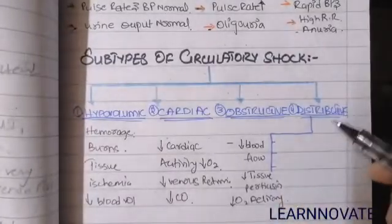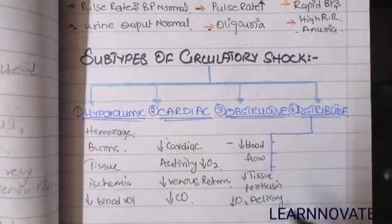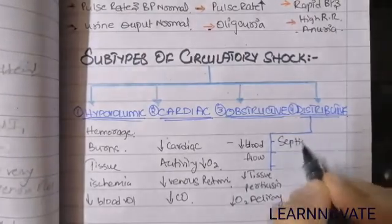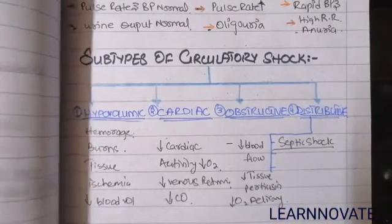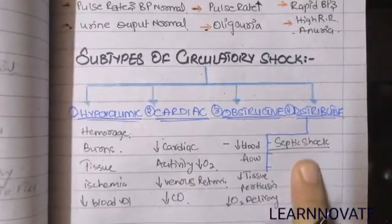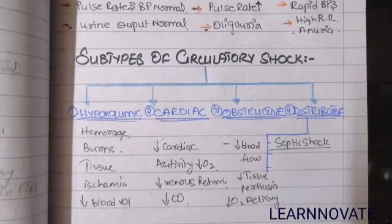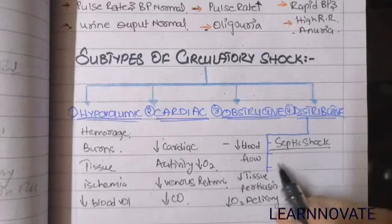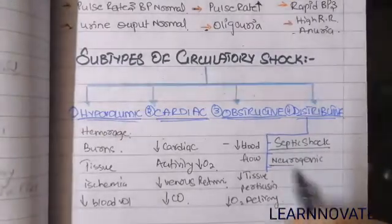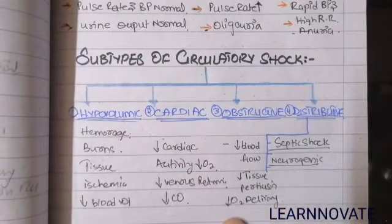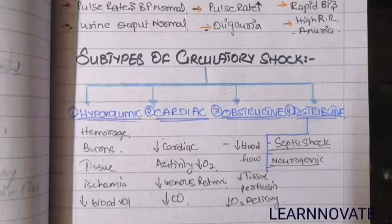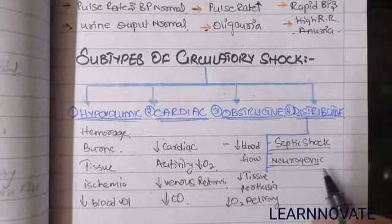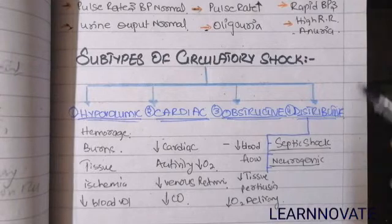The fourth type is distributive shock, which is divided into three subtypes. The first is septic shock, caused by sepsis — blood poisoning — most commonly from gram-negative bacteria, which cause infection and septic shock. The second is neurogenic shock, which occurs in conditions of brain damage or other conditions that decrease vasculature activity and increase vascular capacity, requiring increased blood flow to the brain that the heart cannot supply.